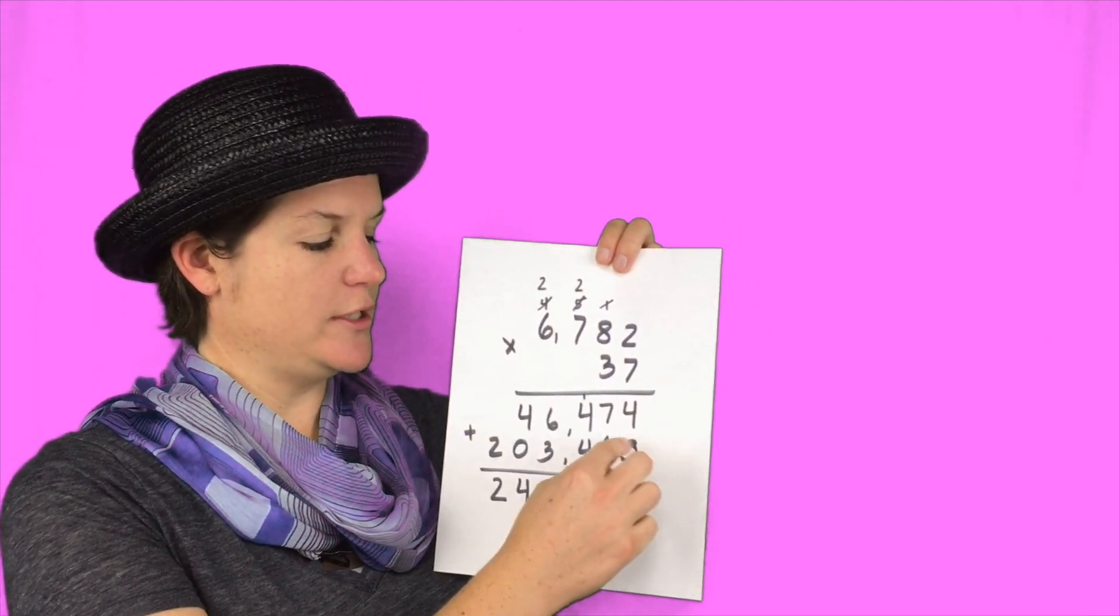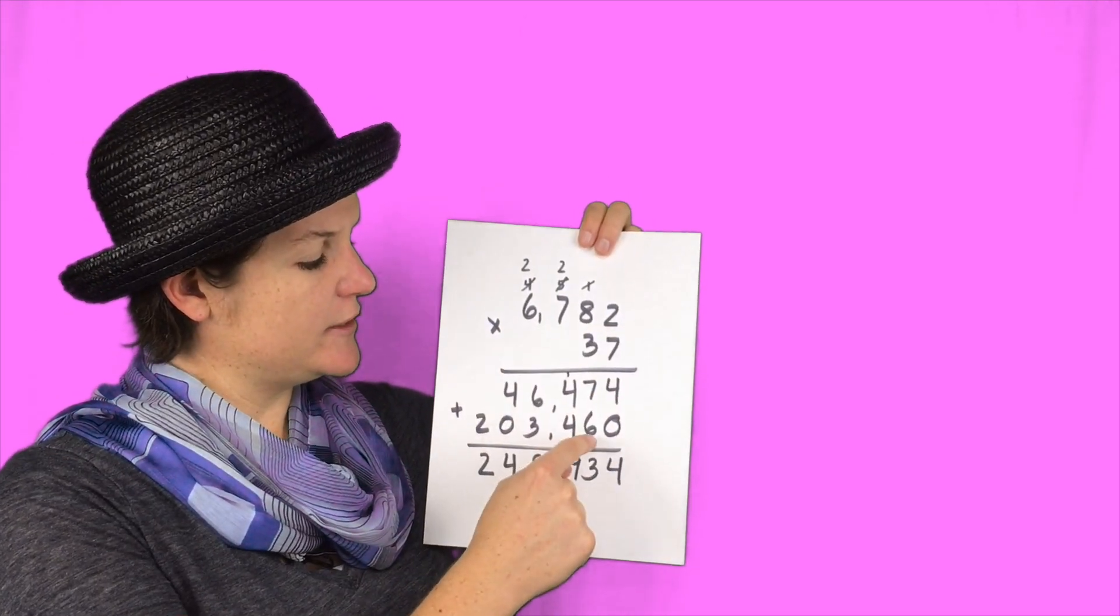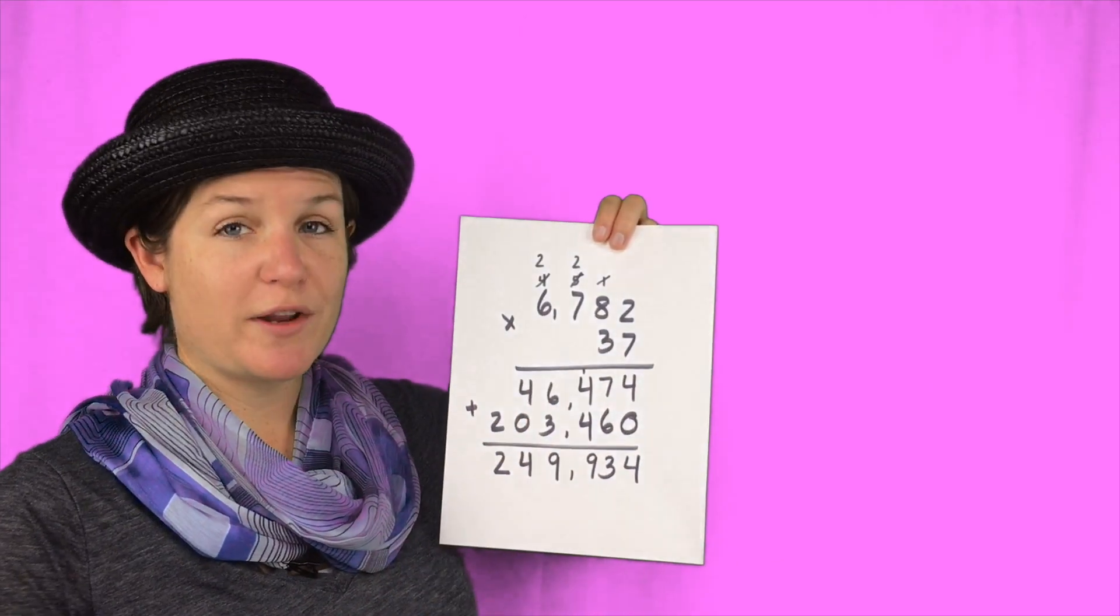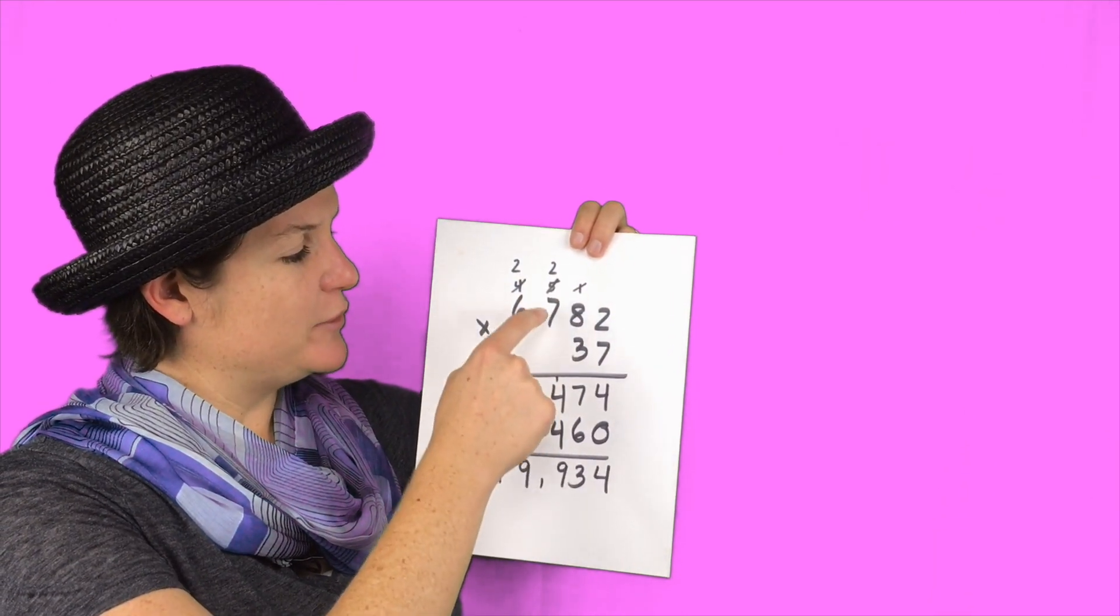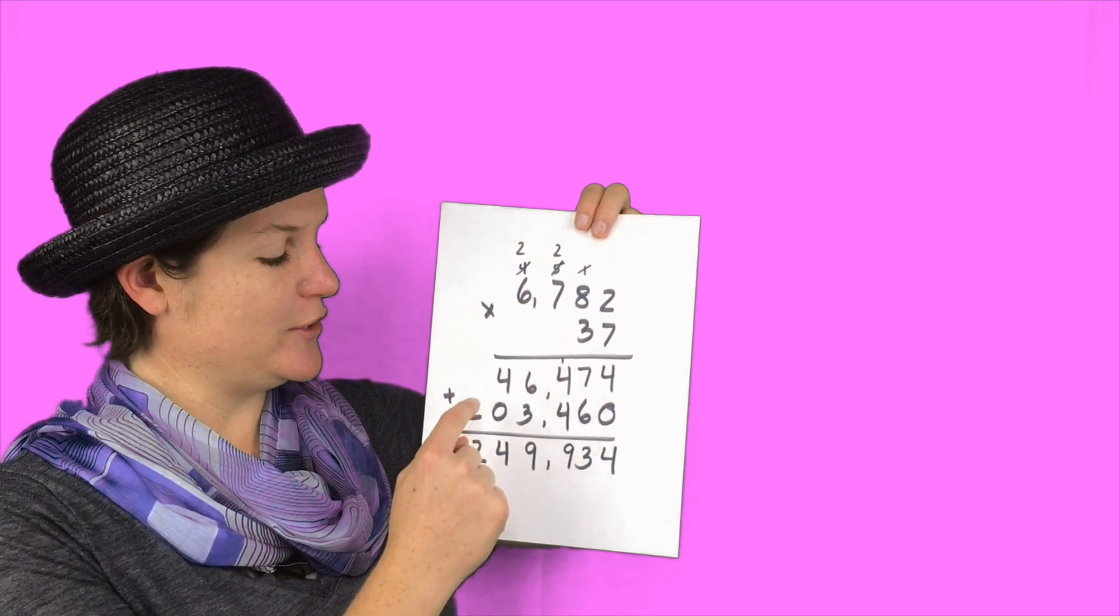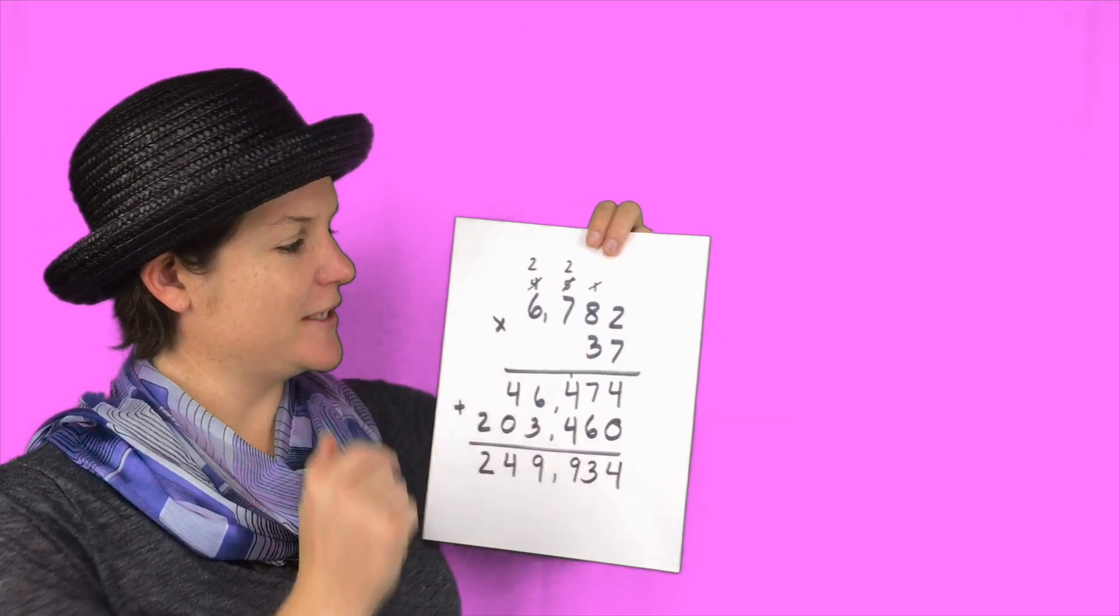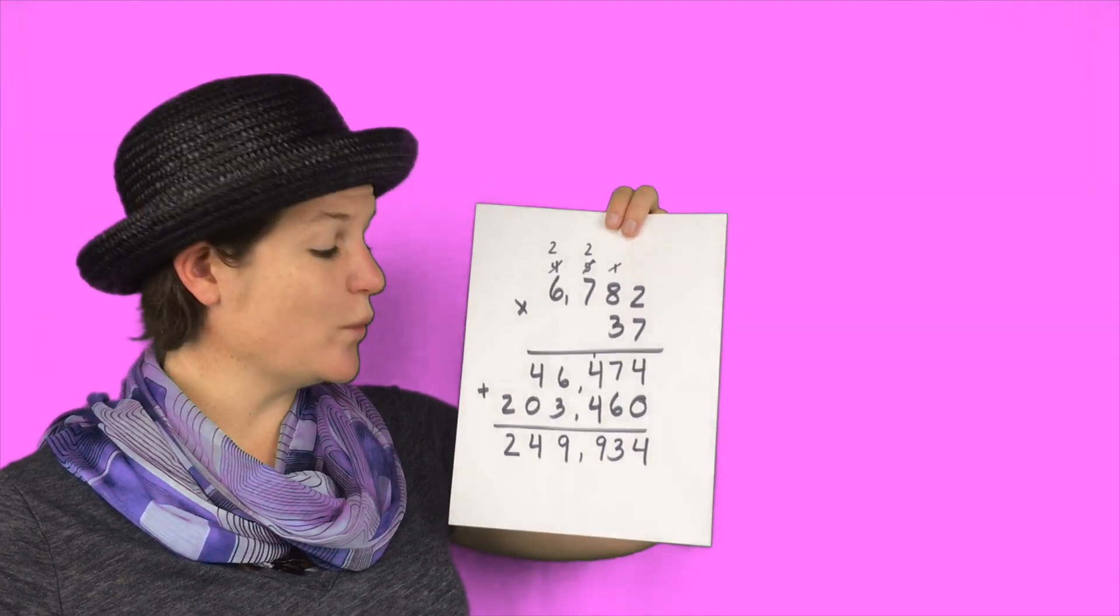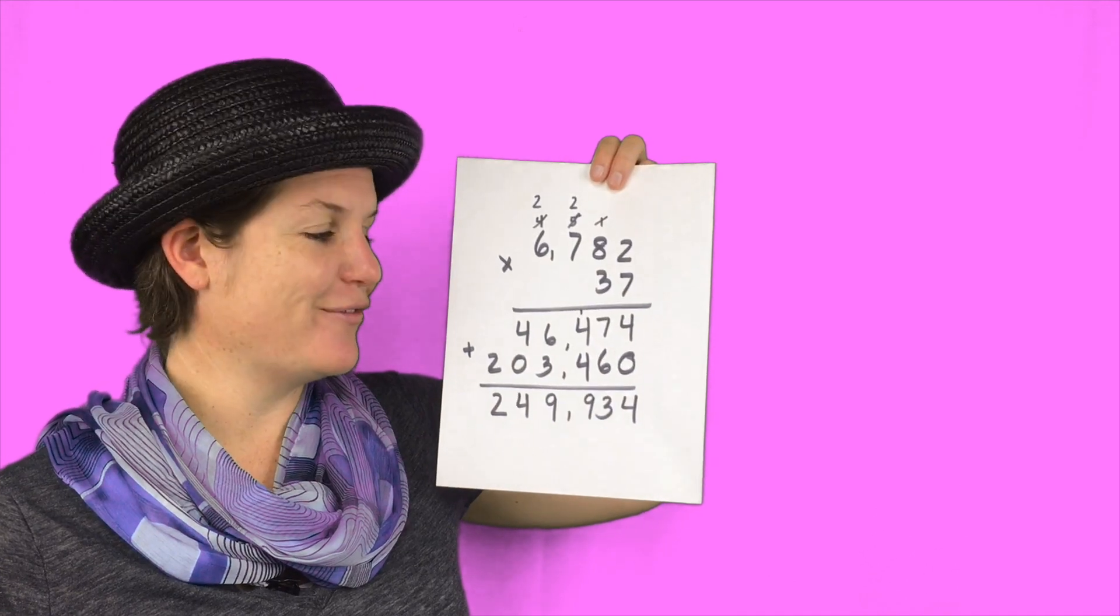Cross everything out. I put a 0 here to hold the place. 3 times 2 is 6. 3 times 8 is 24. Carry the 2. 3 times 2 is 21 plus 2 is 23. Carry the 2. Bring down the 3. And 3 times 6 plus 2 is 20. Then I add them up and I get 240,934.